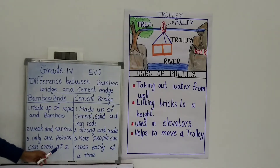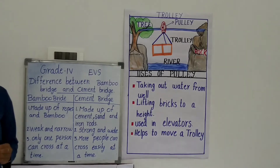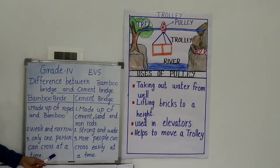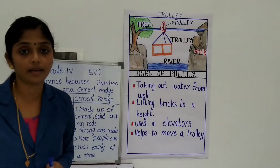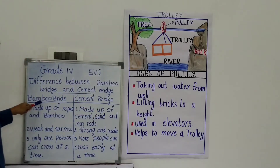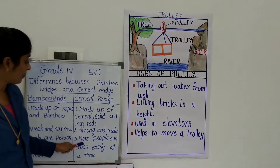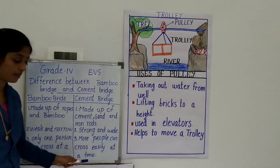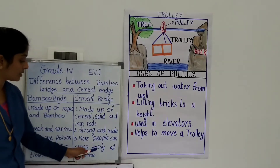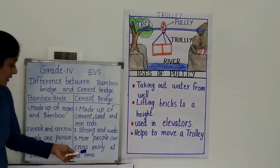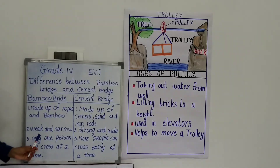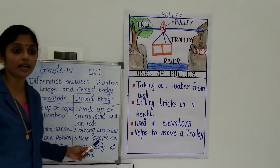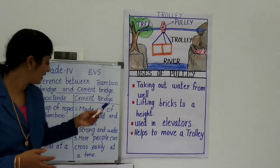Another difference: through the bamboo bridge, only one person can cross at a time. Only one person can move at a time. But through the cement bridge, more people can cross easily at a time. That is the difference between bamboo bridge and cement bridge in terms of capacity.